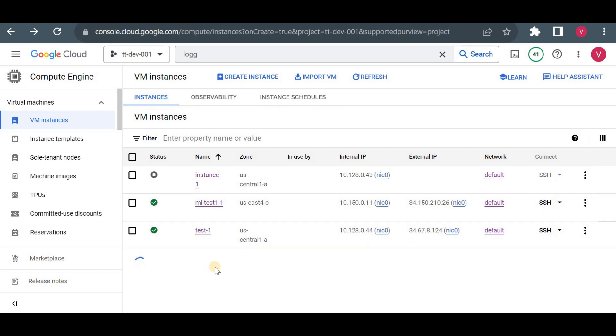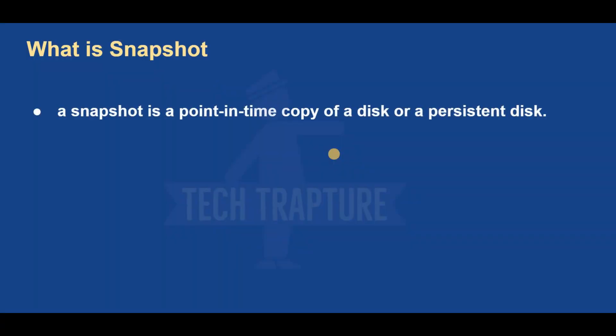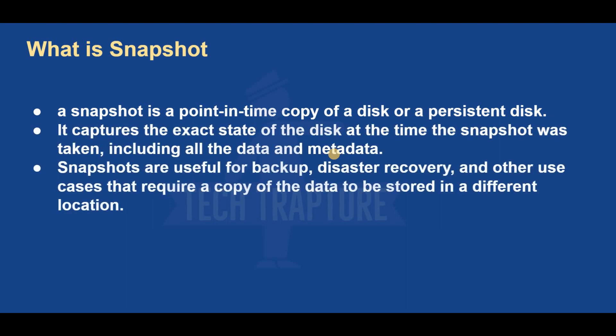The last concept is snapshot. A snapshot is a point-in-time copy of a disk or persistent disk. It is similar to machine image but the key difference is: machine image is a backup of your entire VM including all disks, while a snapshot is a backup of a single disk. If you take a snapshot at 12 AM it captures data up to that point; if you upload 1 GB and take another snapshot at 1 PM, the second snapshot contains only that incremental 1 GB of data.